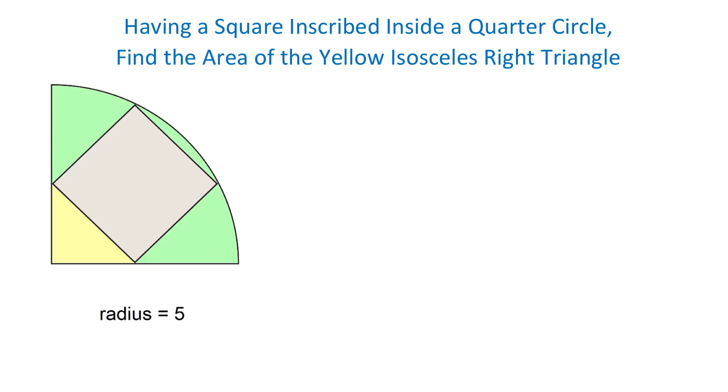Hello, in this figure we have a quarter circle with the radius of 5 units and inside we have an inscribed square. Down here we have an isosceles right triangle formed and we will find the area of this triangle.